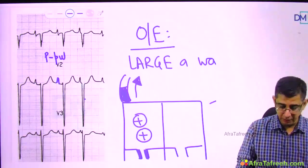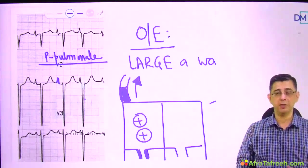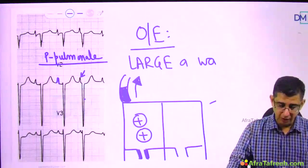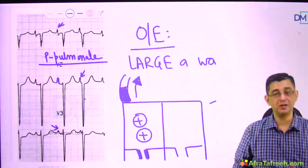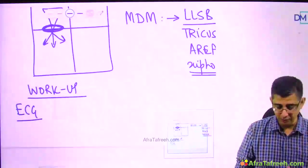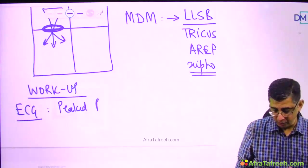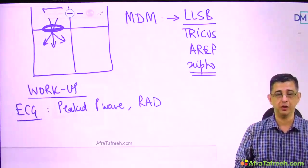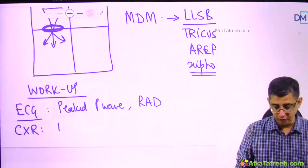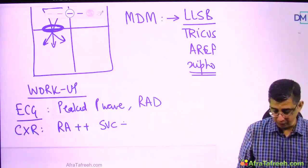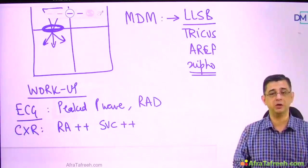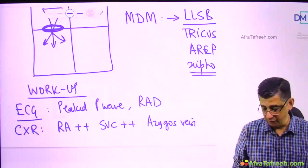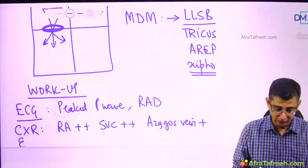This peaked P wave is called P pulmonale. The definition is more than 2.5 mm in limb leads and more than 1.5 mm in chest leads. A prominent peaked P wave indicates a problem with the right side of the heart. ECG also shows right axis deviation, as axis moves toward whichever side of the heart is enlarged. Chest X-ray shows a prominent right atria and superior vena cava, as right heart border is formed by the right atria and SVC, which are enlarged. The azygous vein shadow is also relatively pronounced.